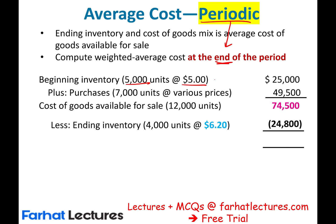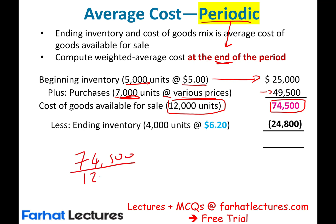We purchased 5,000 units at $5 for $25,000, then 7,000 units in total at various prices totaling $49,500. The total cost invested is $74,500 across 12,000 units. We compute an average cost by taking $74,500 divided by 12,000 units. We wait until the end of the accounting period to do this computation because we're using the periodic method. The average cost comes to $6.20 per unit.